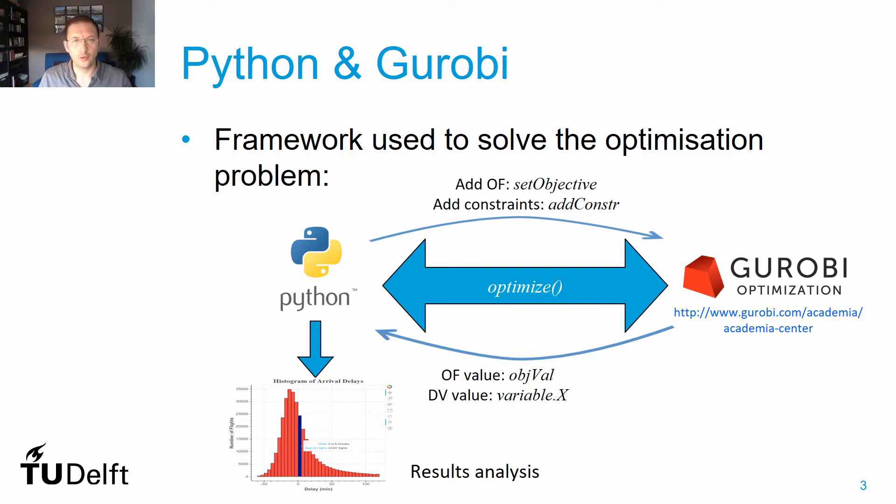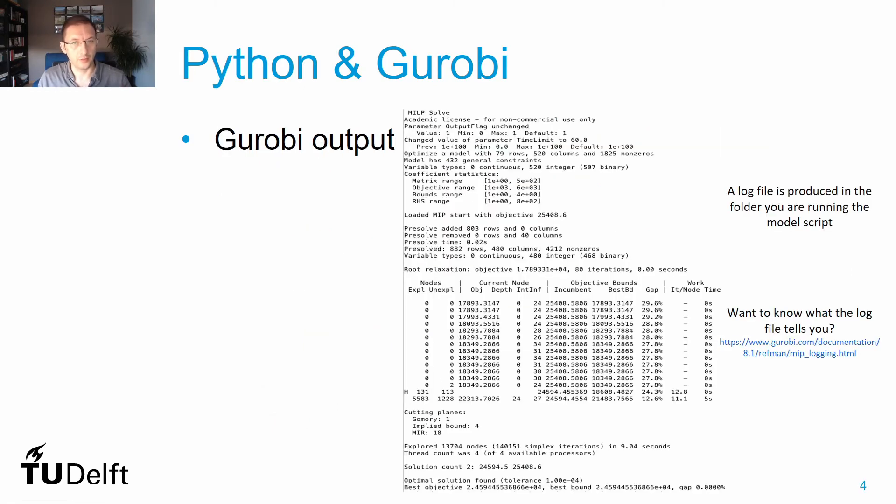I'm suggesting you use Python to analyze the results because although Gurobi displays on the screen the evolution and the process to get the optimal solution and it produces a log file where you can revisit this information, this is not complete and does not provide you the details about the solution that you have obtained, so it's better to use Python to read the final solution and display it.